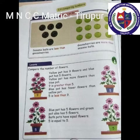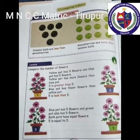Compare the number of flowers. See the flower pots. The yellow pot has 9 flowers and the blue pot has 5 flowers. The blue pot has fewer flowers than the yellow pot. Therefore, 5 is less than 9. In the second picture, blue pot has 5 flowers and green pot also has 5 flowers — both are equal. So 5 is equal to 5.